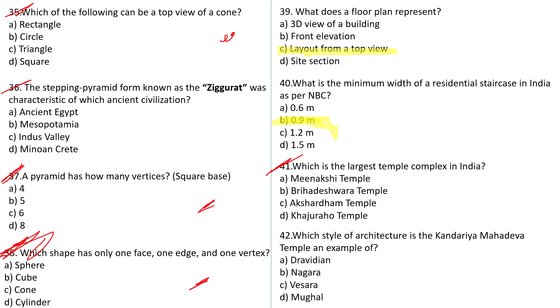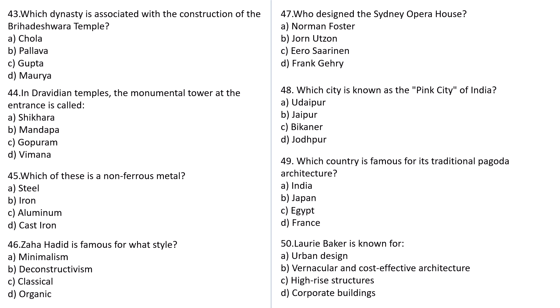Question number 42: Which style of architecture is the Kandariya Mahadeva temple an example of? Options: Dravidian, Nagara, Vesara, or Mughal. The answer is B — Nagara style architecture. Question number 43: Which dynasty is associated with the construction of Brihadeshwara temple? Options: Chola, Pallava, Gupta, or Maurya. The correct answer is Chola. Question number 44: In Dravidian temples the monumental tower at the entrance is called — Shikhara, Mandapa, Gopuram, or Vimana. The correct answer is Gopuram.